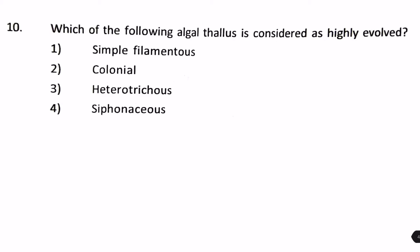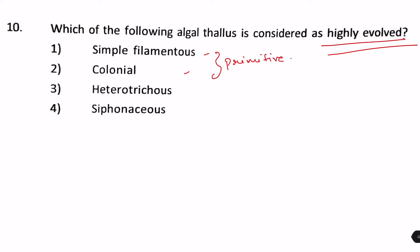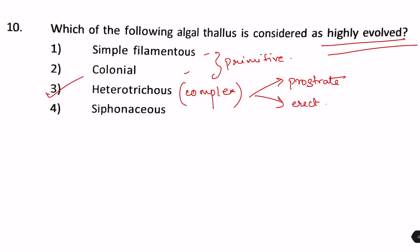Which algal thallus is considered highly evolved? Options are: simple and filamentous, colonial, heterotrichous, and siphonus. Simple, filamentous, and colonial are primitive characters. More advanced forms are siphonus and heterotrichous. But the ultimate most advanced is actually heterotrichous — it's a complex thallus with both prostrate and erect structures. That's why it is called highly evolved. The answer is number 3.